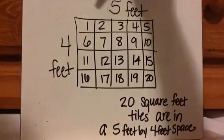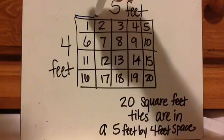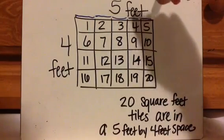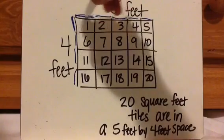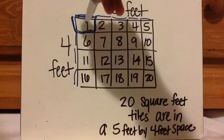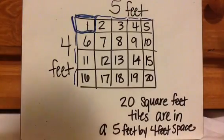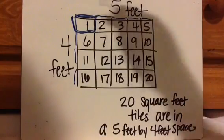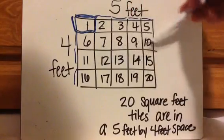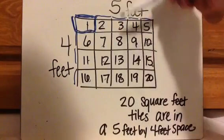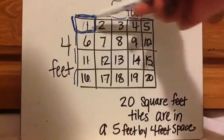Here's an example. If I have a designated area and it's five feet by four feet, I'm basically saying there are five tiles across and four tiles down. So counting all the way through — one through twenty — five feet by four feet gives you twenty square feet tiles, or twenty squares that can fit in that space.